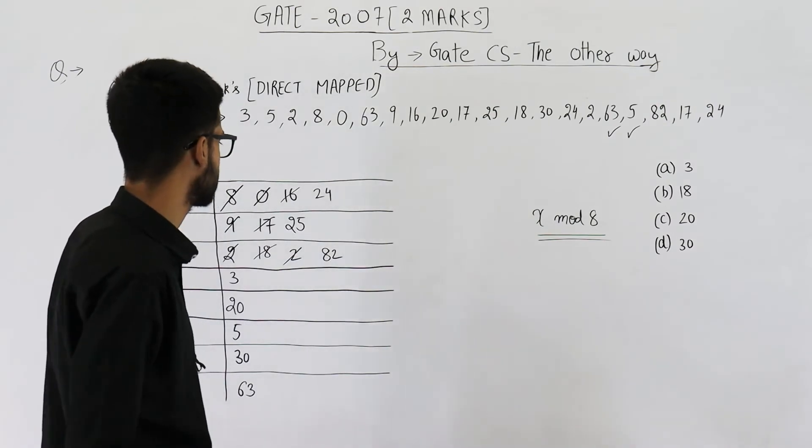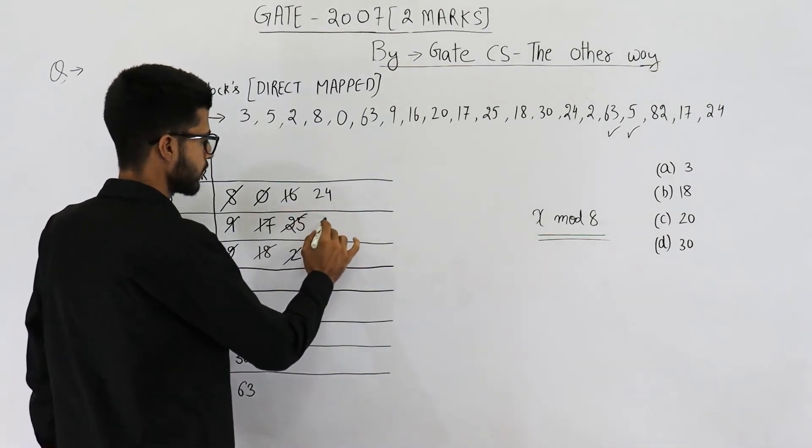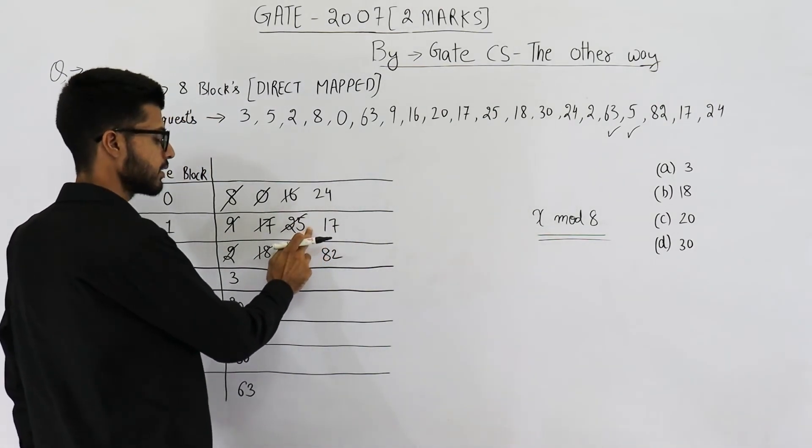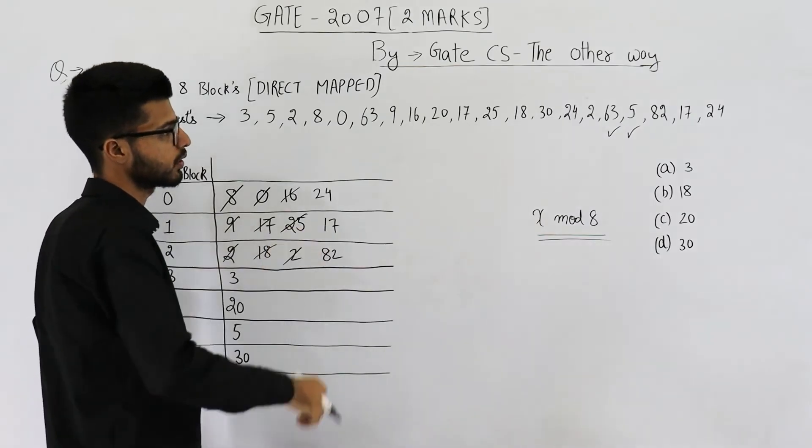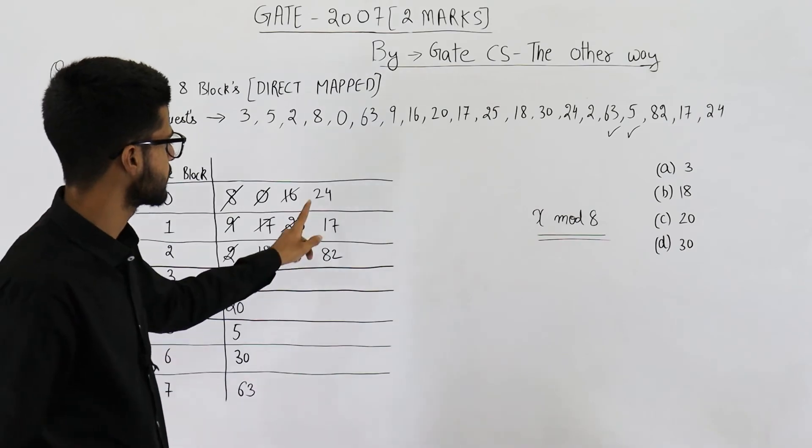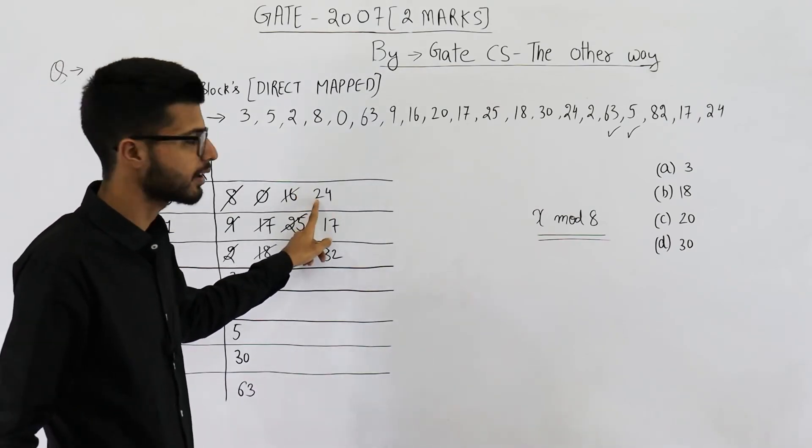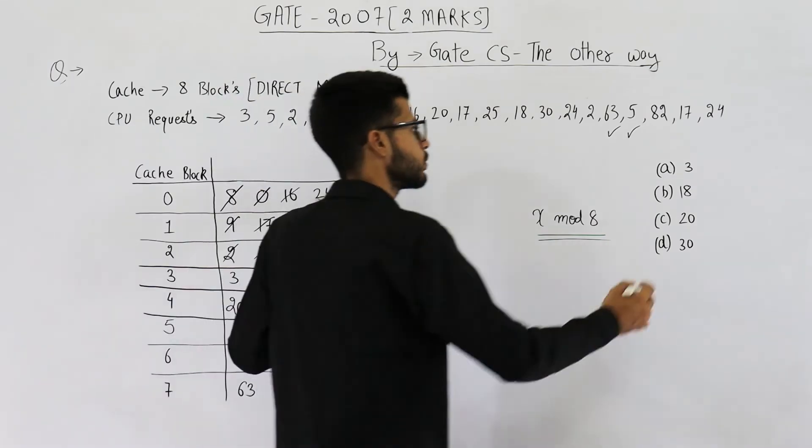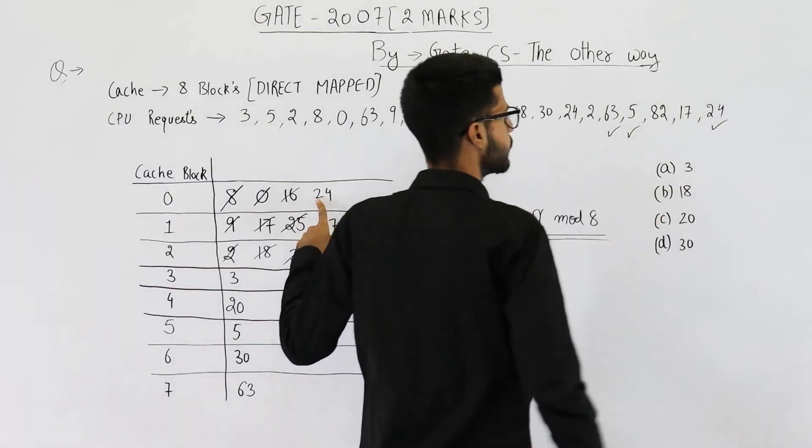Then you have a request for 17. 17 will be mapped here. So whatever is present in this cache line, just replace it with 17. Next one is 24. 24 as you can see will be mapped here. It is already present in this cache line. So this one will also be a hit.